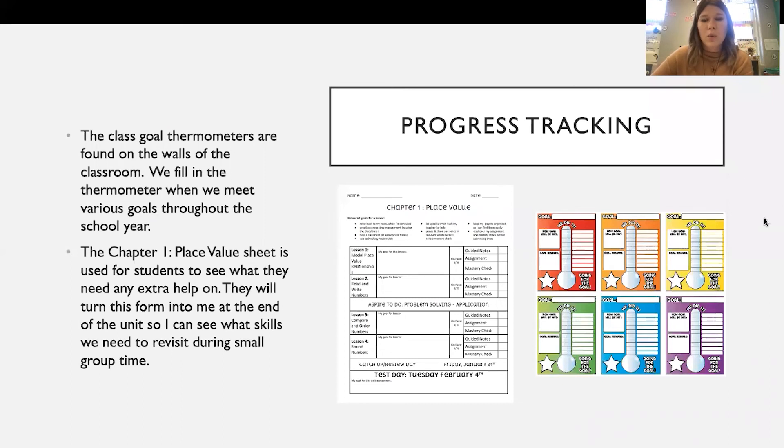Progress tracking. We have class goals posted in the room. We fill up the thermometers based on how well we are meeting our goals, what that would look like. The chapter one place value sheet is used for students to see what they need any extra help on. So they are filling in this. My goal for this lesson is to get an 80% or higher. My mastery check, I got an 80% on. So that's just them self-checking themselves with, okay, I need to do better on multiplying, I need to do better on dividing.